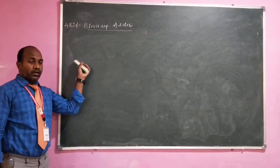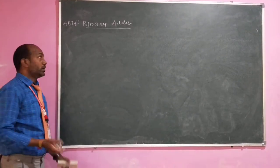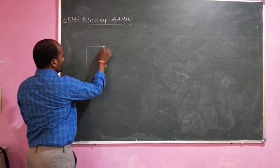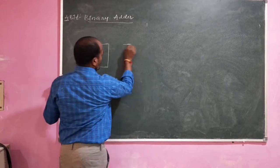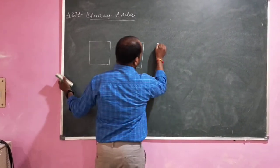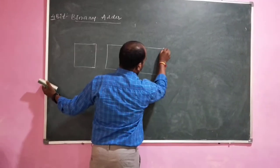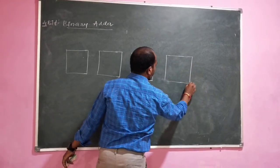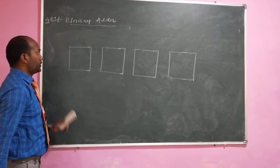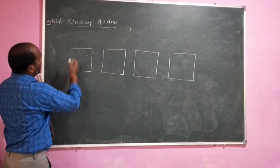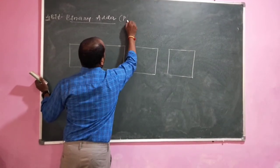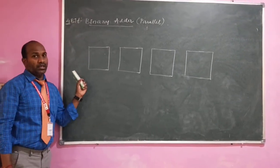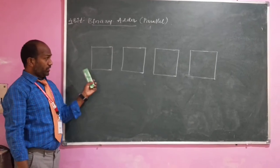In general, for a generic N-bit binary adder, we need N full adders. Since N is 4 here, we need 4 full adders. These full adders are connected in a cascade fashion — that is, in a series fashion. This 4-bit binary adder is also a parallel adder, meaning the two numbers are added simultaneously.